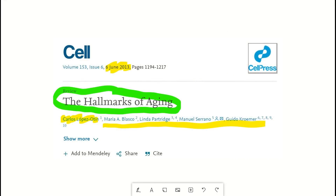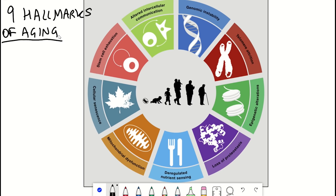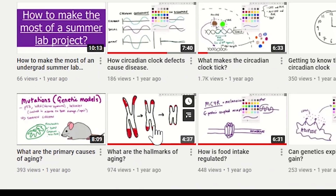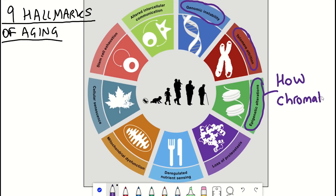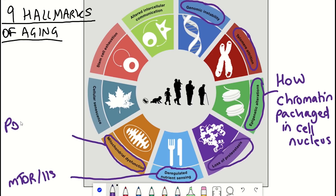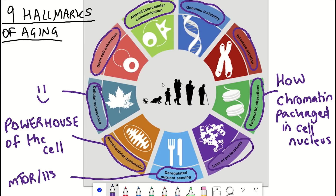In this review paper, they describe ageing by nine key hallmarks. If some of them don't make any sense to you, I have made a previous video where I briefly introduce each of the hallmarks. So just to read them out: we've got genomic instability, telomere attrition — so shortening of telomeres — epigenetic alterations, referring to how chromatin is packaged in the nucleus of a cell, loss of proteostasis referring to protein unfolding and protein aggregation, deregulated nutrient sensing which refers to mTOR and insulin signaling, mitochondrial dysfunction — mitochondria being the powerhouse of the cell — cellular senescence, stem cell exhaustion, and altered intercellular communication.